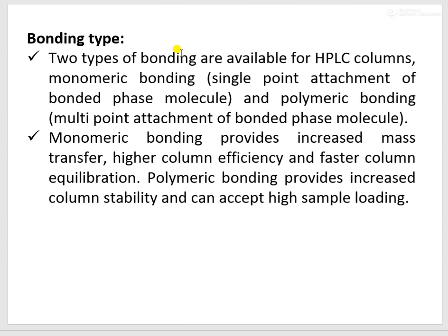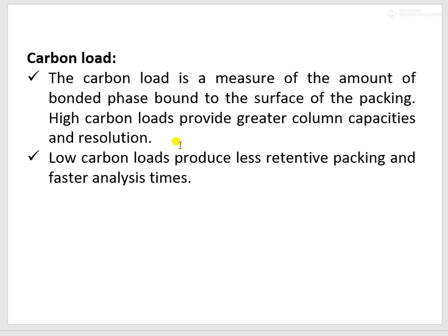Coming to bonding type — two types of bonding are available for HPLC columns. One is monomeric, which is single-point attachment of the bonded phase molecule, and the other is polymeric bonding, which is multipoint attachment of the bonded phase molecule. Monomeric bonding provides increased mass transfer, high column efficiency, and faster column equilibrium. Polymeric bonding provides increased column stability and can accept high sample loading. Next is carbon load — the carbon load is a measure of the amount of bonded phase bound to the surface of the packing.